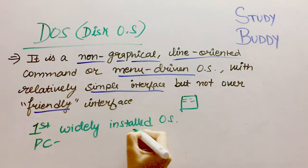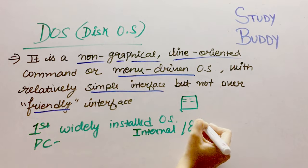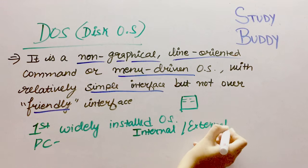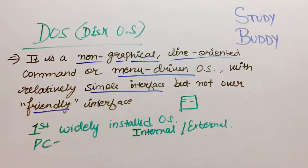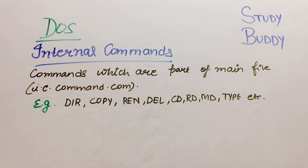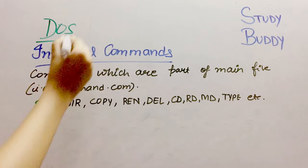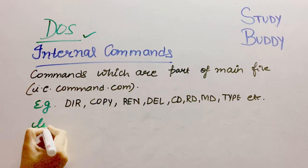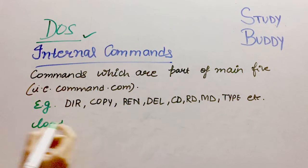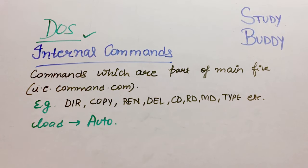Now we have two commands. One is internal commands and the other is external commands. So starting with internal commands: commands which are part of the main file are called internal commands. When you load the DOS, the internal commands automatically load into the computer, so you don't need to install them separately.